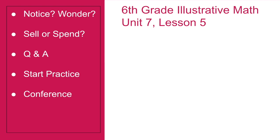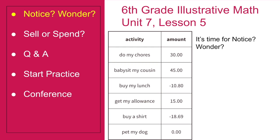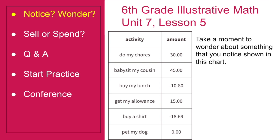Welcome to today's lesson: 6th Grade Illustrative Math, Unit 7, Lesson 5 — Using Negative Numbers to Make Sense of Contexts. Let's start by playing a warm-up game called Notice Wonder. Take a moment to wonder about something that you noticed shown in this chart.